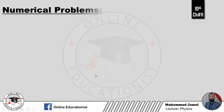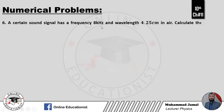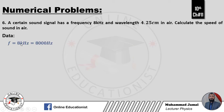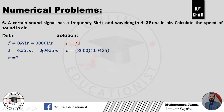Problem number 6: A certain sound signal has a frequency of 8 kHz and wavelength 4.25 cm in air. Calculate the speed of sound in air. Data: f equal to 8 kHz — Hz mein convert: 8,000 Hz. Lambda equal to 4.25 cm — meter mein: 0.0425 meter. V find karni hai. Formula V equal to f times lambda: V equal to 8,000 into 0.0425. Velocity aayegi 340 meter per second.